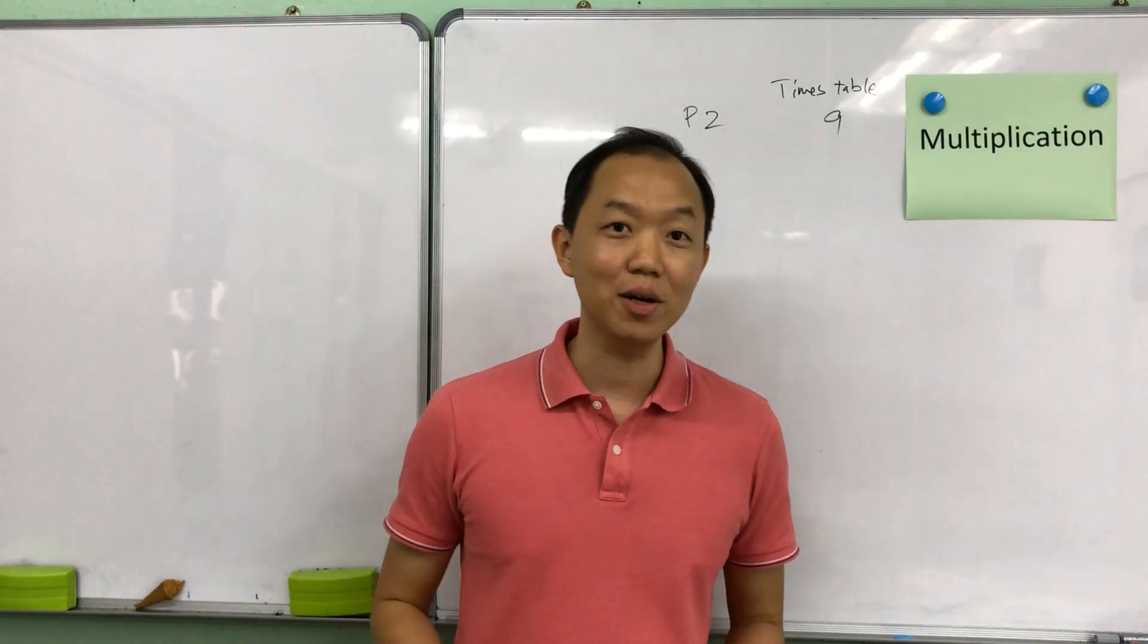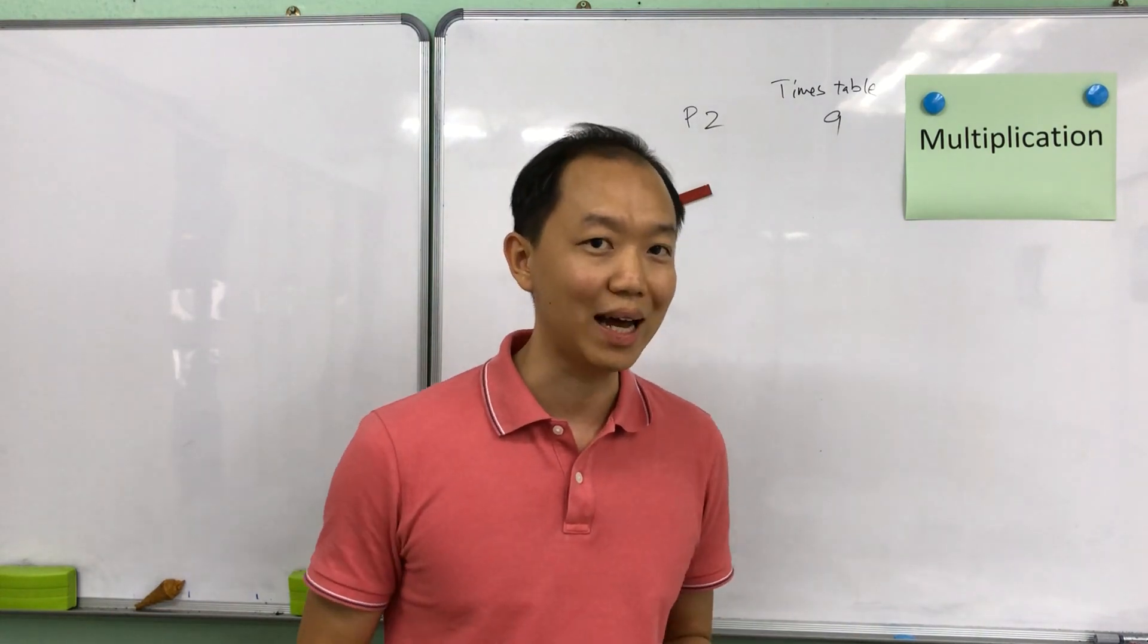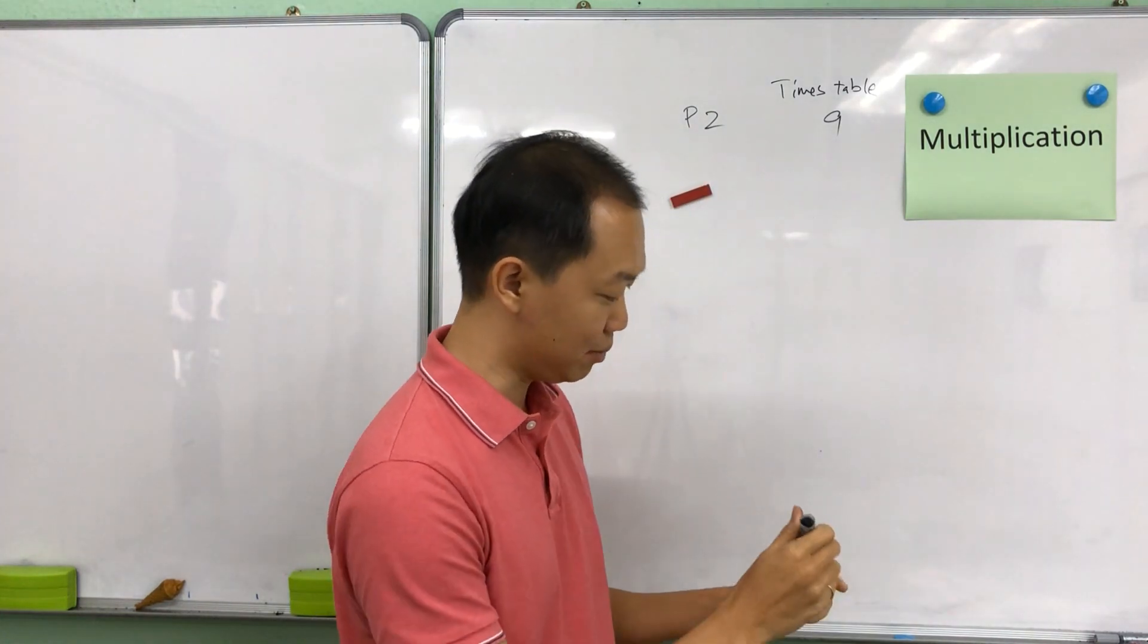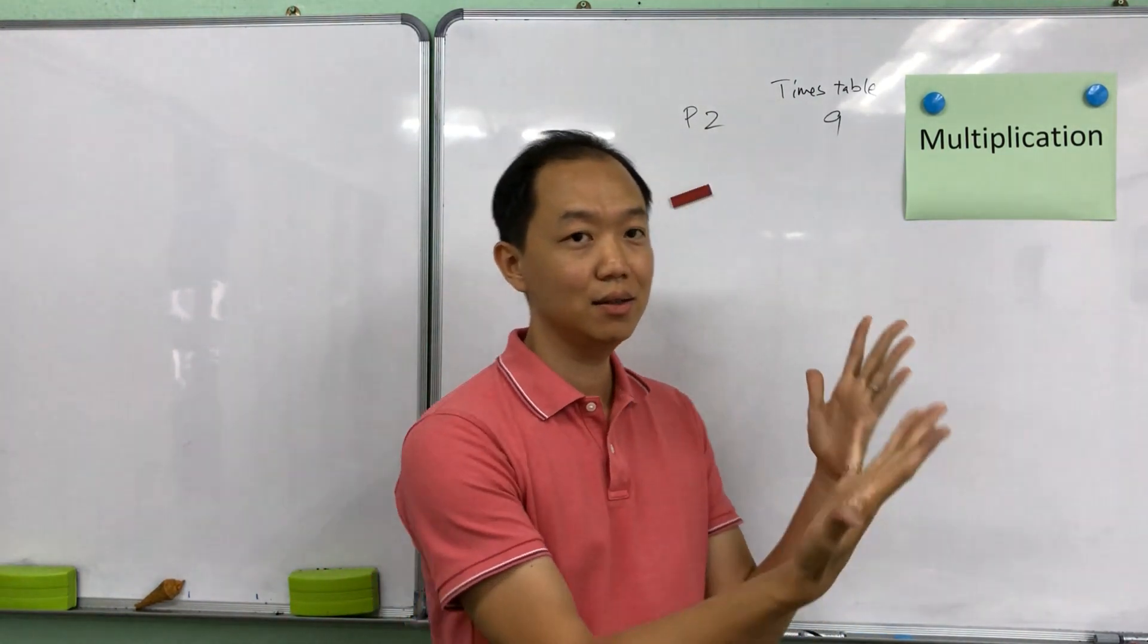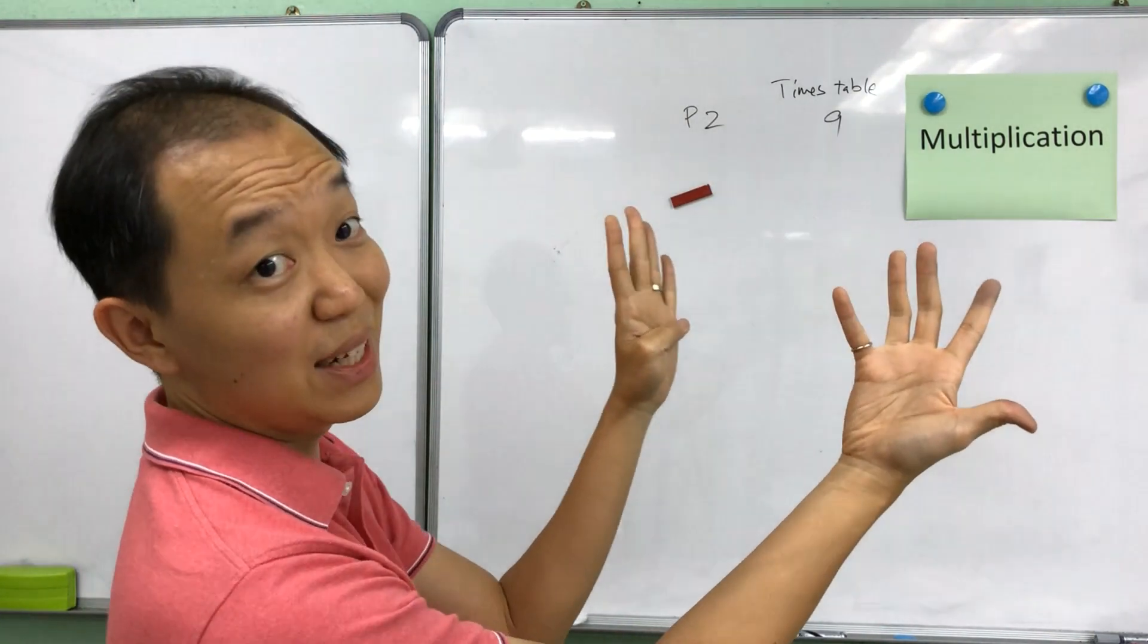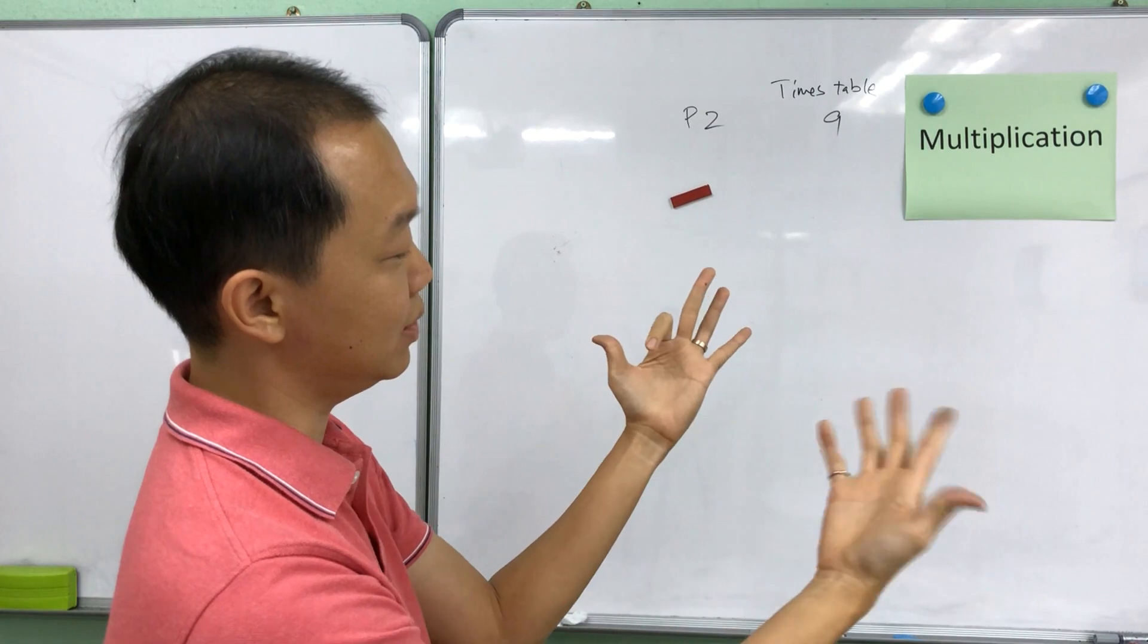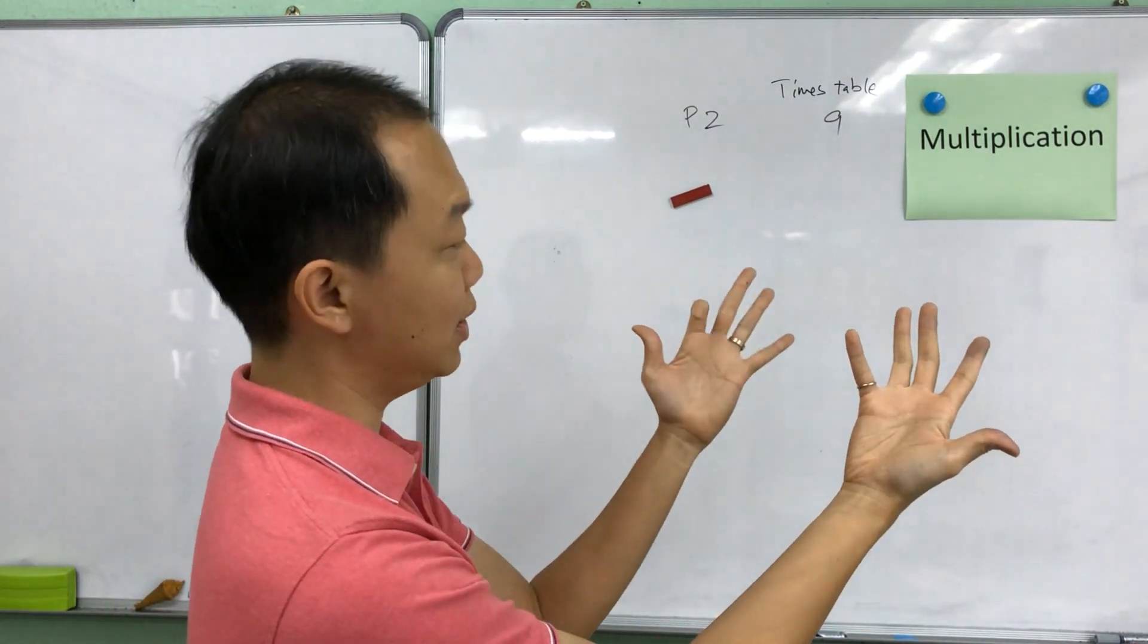Now of course when we are talking about the multiplication, we cannot do away with explaining how the special 9 times table work. So that's a very quick demonstration. So if you need to take a 1 times 9, what do you do? You look at your hands over here. You just cover 1. So 1 times 9 and you count the number of fingers left that is equal to 9. So what about 2 times 9? You just cover the second one. So that's 1 here and 8 on the other side. So that's 18. 3 times 9, like that. 27.